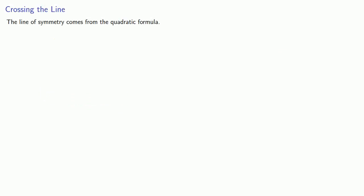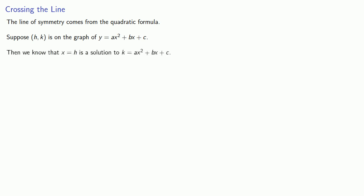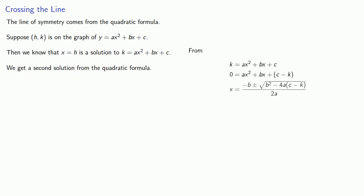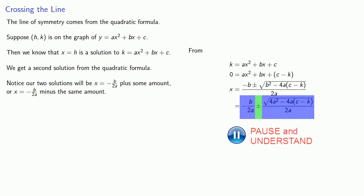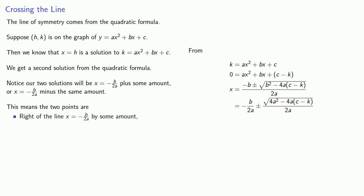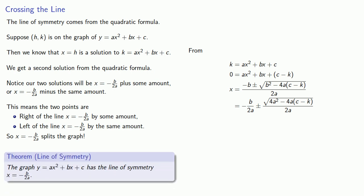The line of symmetry comes from the quadratic formula. Suppose some point h, k is on the graph of y equals ax squared plus bx plus c. Then x equals h is a solution to k equals ax squared plus bx plus c. We get a second solution from the quadratic formula. Our two solutions will be x equals negative b over 2a plus some amount, or x equals negative b over 2a minus the same amount. This means the two points are equally right and left of the line x equals negative b over 2a, and so x equals negative b over 2a splits the graph. Therefore, the graph of y equals ax squared plus bx plus c has the line of symmetry x equals negative b over 2a.